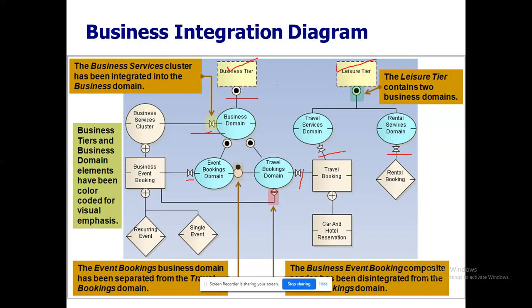Here you can see event booking, travel booking, and rental booking. Rental booking has been introduced additionally here. Business event booking and travel booking we saw in the previous section. In the previous section they omitted flight reservation and incorporated car and hotel reservation. The event booking is going to be clubbed with the travel booking using the projection notation.